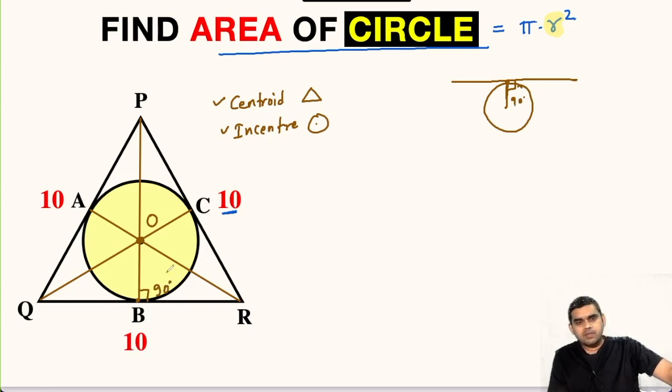Now another property: it is an equilateral triangle and we have this OB perpendicular to QR. Then by symmetry this will be equal to this. So we can divide it into two parts. So this will be 5 units and this will also be 5 units.